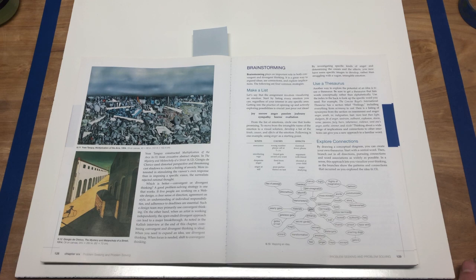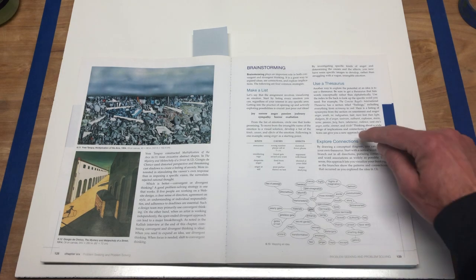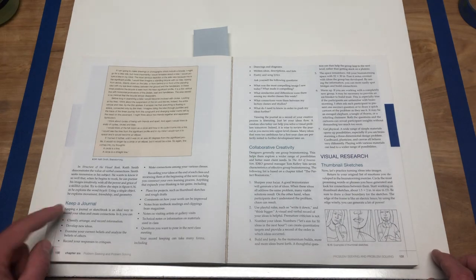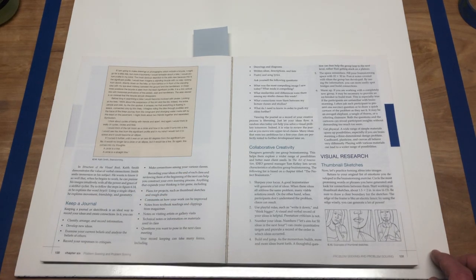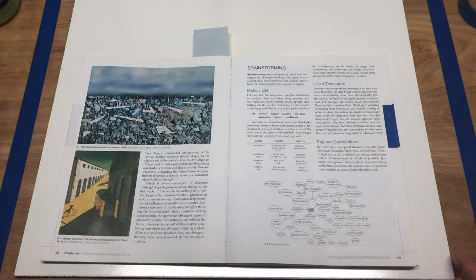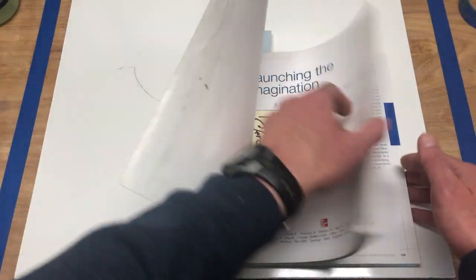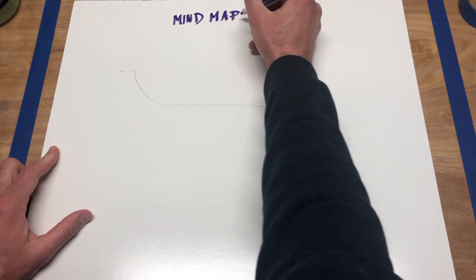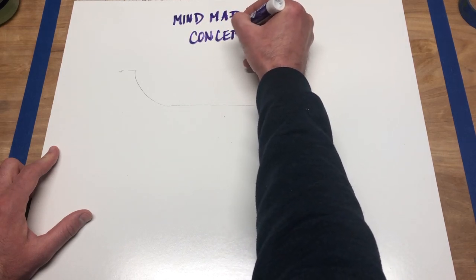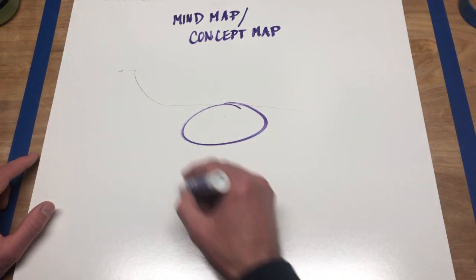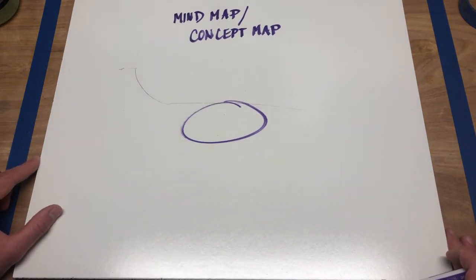I always start with making lists, using a thesaurus, and this one specifically is what we're going to talk about today: exploring connections. Some other things include keeping a journal and collaborative creativity. Now I want to pause right there and take a look at that — that, my friends, is called a mind map, or some of you might know it as a concept map. The idea is we have a central theme, and from that there go all the other little seedlings of that idea.